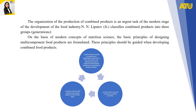The organization of the production of combined products is an urgent task of the modern stage of food industry development. Lipatov classifies combined products into three generations: products close to traditional organoleptic parameters but with some raw materials replaced by hydrated components equivalent in protein content; products that meet the needs of essential nutrients; and products that provide material and energy balance in the human body. Based on modern concepts of nutritional science, basic principles for designing multi-component food products are formulated to guide development of combined food products.